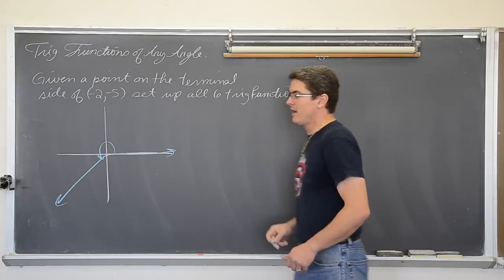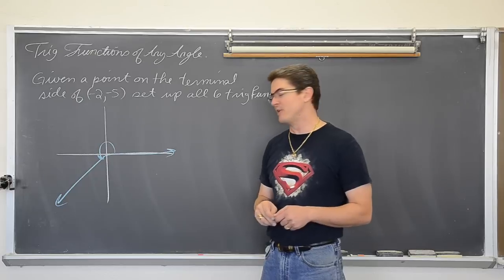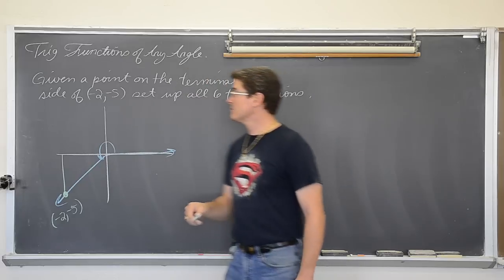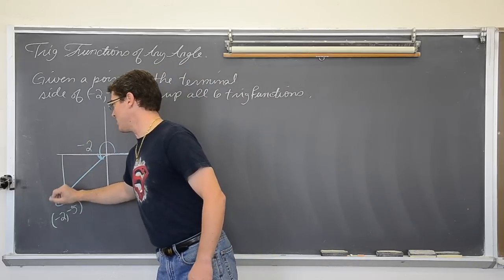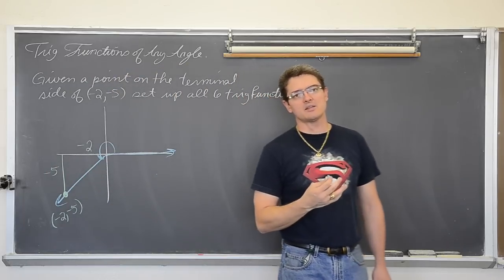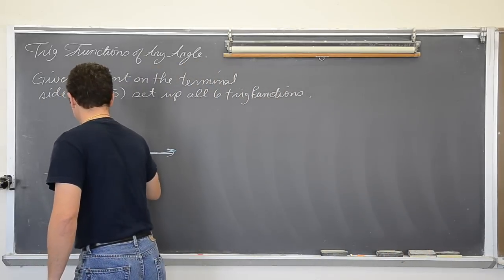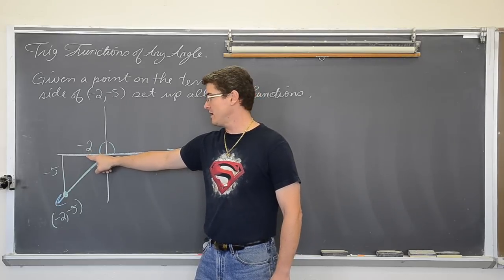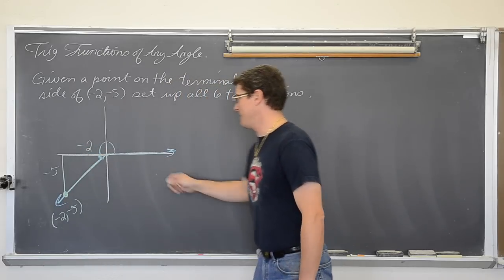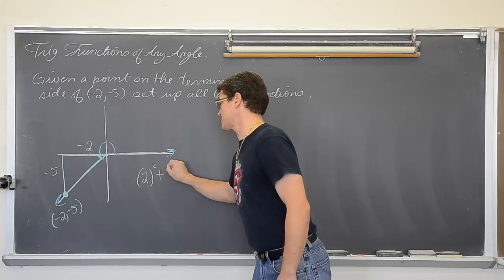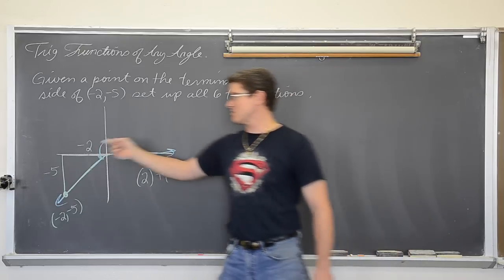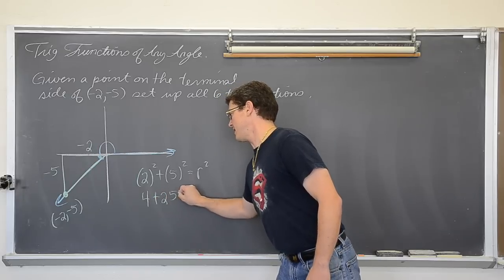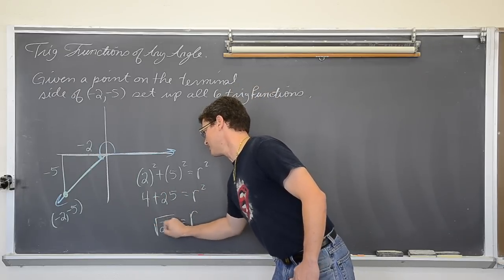We are going to set up the reference triangle, and that will allow us to work out our six trig functions. We've got a point on the terminal side of negative two, negative five. I'm going to put those negative values along the x and y movement just to make sure I don't forget those signs. Now I have a right triangle — a reference triangle against the x-axis. A little Pythagorean theorem work: two squared plus five squared equals r squared. That's 4 plus 25 equals r squared, so r is going to be the square root of 29.